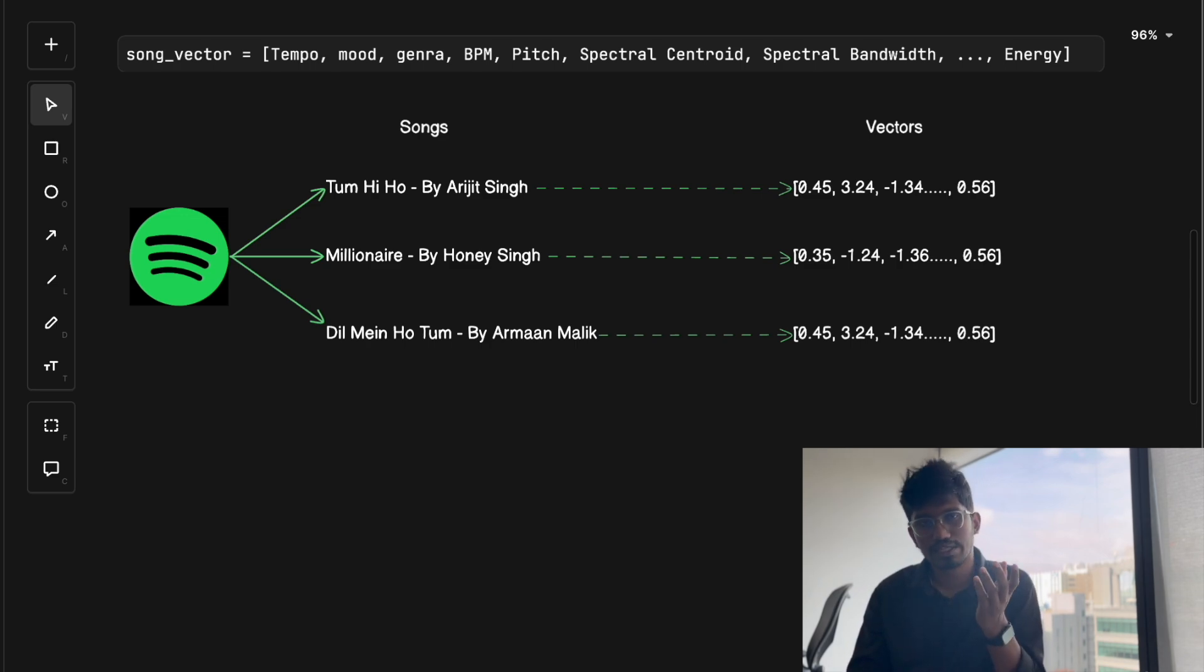So that was a brief overview of how songs can be converted into vectors. Here we have taken three examples and we have the corresponding vectors for these songs. Now once we have these vectors for the songs, how does Spotify actually recommend the songs for you?